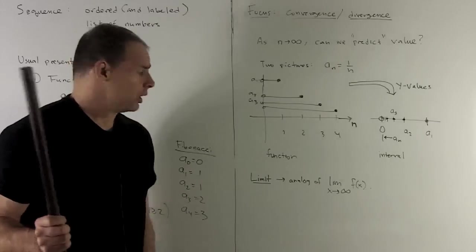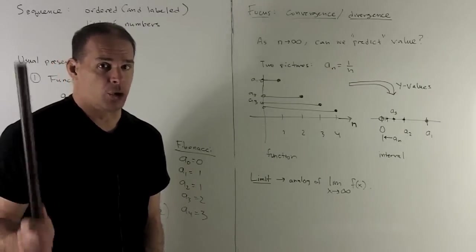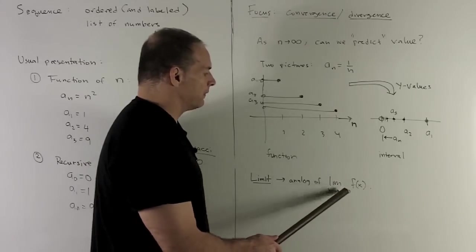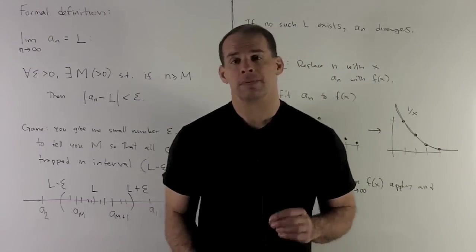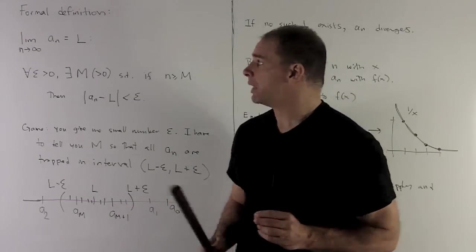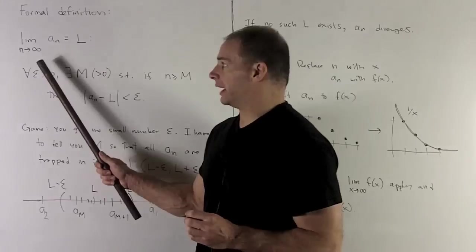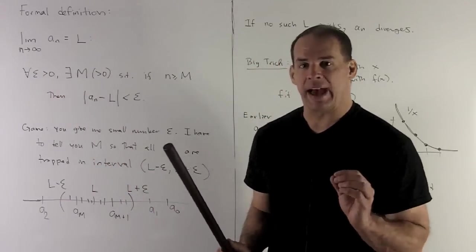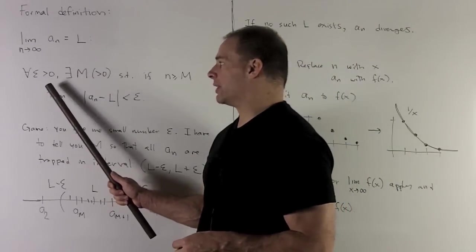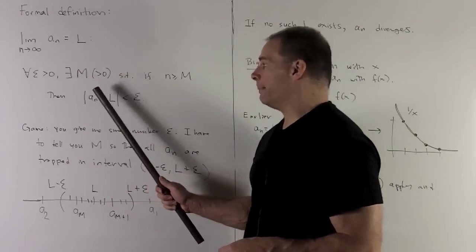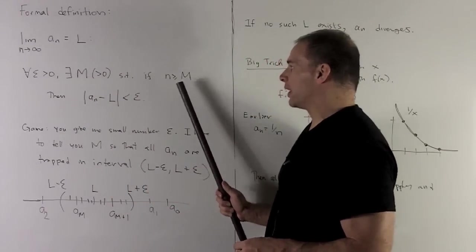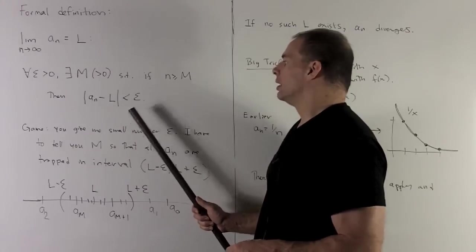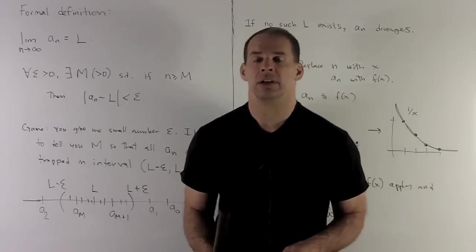So the idea is, we're going to have this notion of a limit for sequences. It's going to be the analog of the limit as x goes to infinity of f of x. For a formal definition of a limit, we're going to have the limit as n goes to infinity of a sub n is equal to L. And then we have our Greek, for all epsilon bigger than 0, there exists an m bigger than 0, such that if n is bigger than or equal to m, then absolute value of a sub n minus L is less than epsilon.